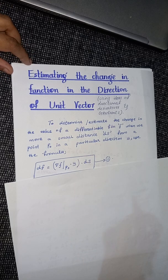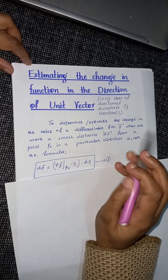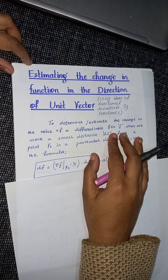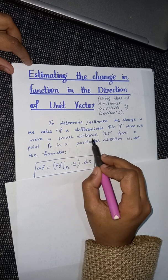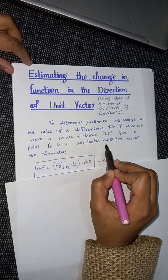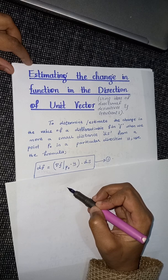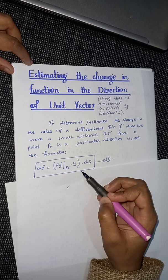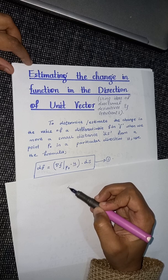The statement says: to estimate the change in the value of a differentiable function — meaning a function whose derivative exists — we want to estimate the change when we move a small distance ds from a point p₀ in the direction of a unit vector. For example, given a point p₀, we want to find the estimate in the direction of some unit vector and find the change in our function when we move along that line.